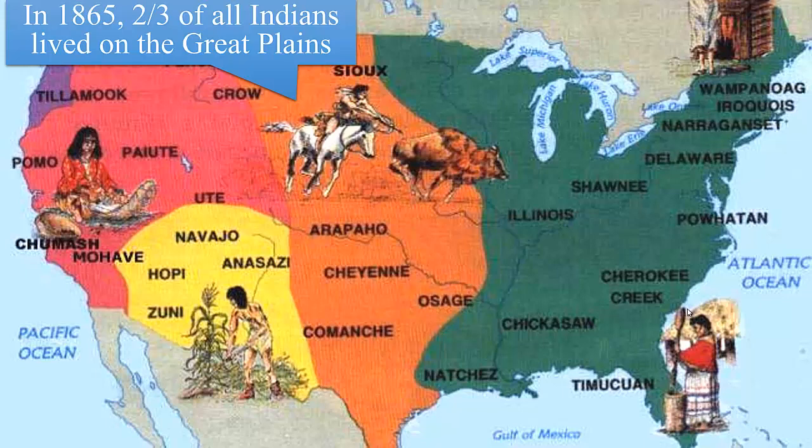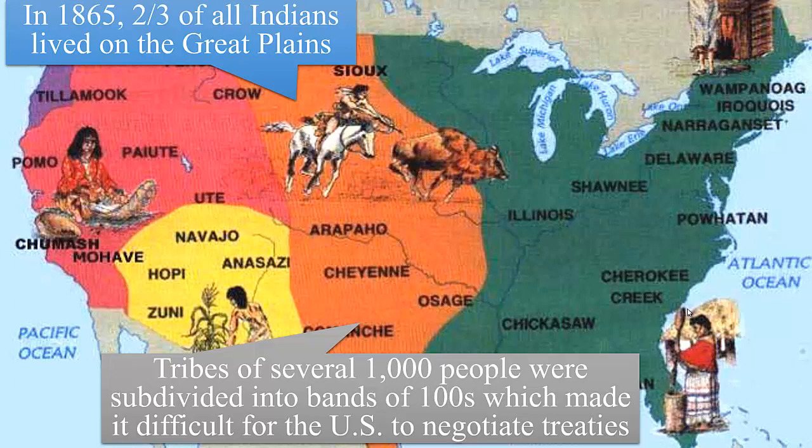What makes some of these tribes difficult for the federal government to deal with is they don't understand the structure. Tribes like the Crow may be made up of several thousand people. The Sioux are probably tens of thousands of people, but they're broken up over the plains into smaller bands of hundreds, each one with their own semi-autonomous leadership. The United States doesn't understand that they can't negotiate with one person representing all of the Sioux, but rather they need to negotiate with lots of different leaders of lots of different bands.